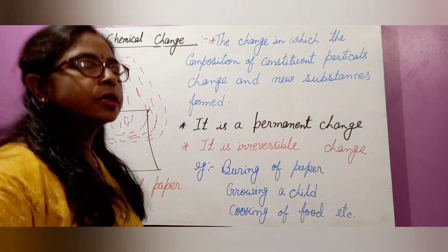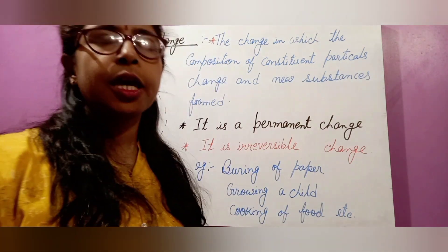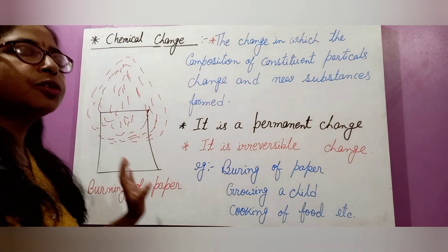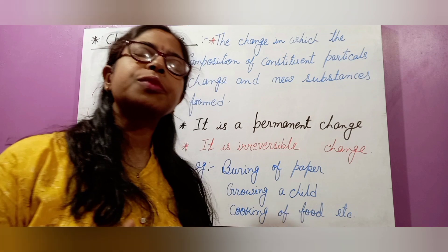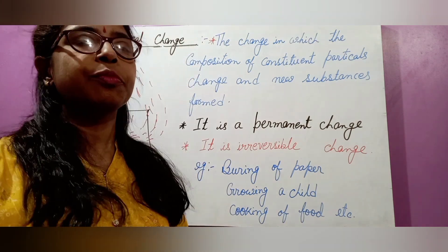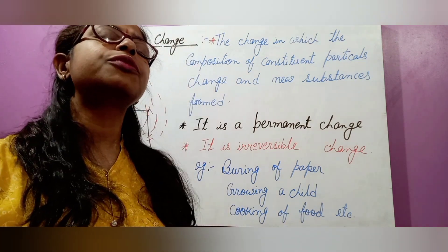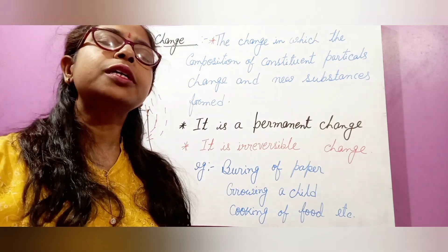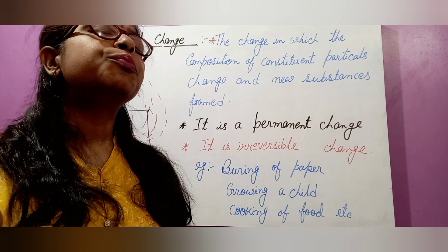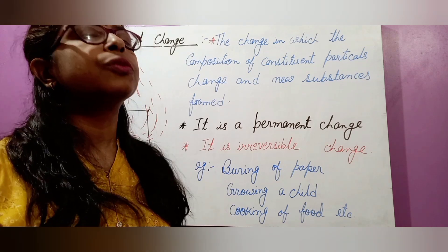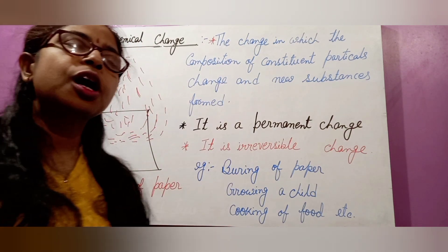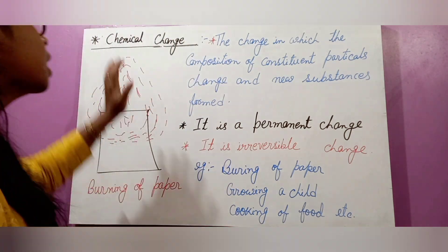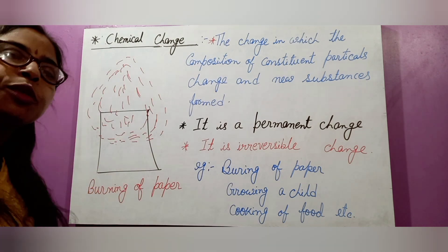Children, our second example is burning of paper. After burning the paper, the composition of the constituent particles becomes changed. The paper changes into different types of gases like carbon dioxide and sulfur dioxide, and after that we get a black-colored residue that is known as ash. So the composition became changed, and it is known as a chemical change.